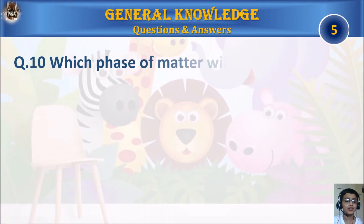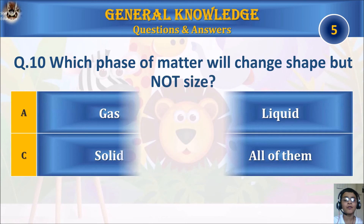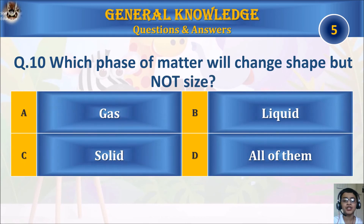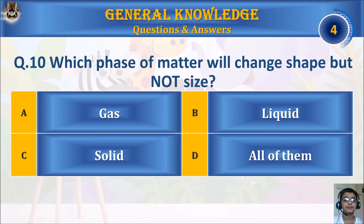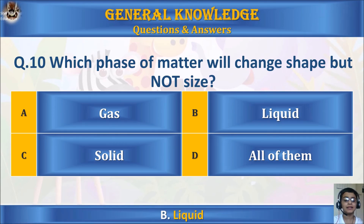Question 10: Which phase of matter will change shape but not size? A: gas. B: liquid. C: solid. Or D: all of them. Your time starts. The answer is B: liquid.